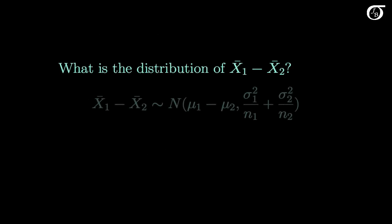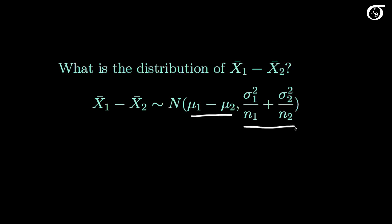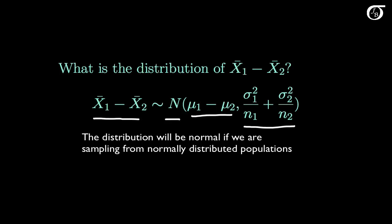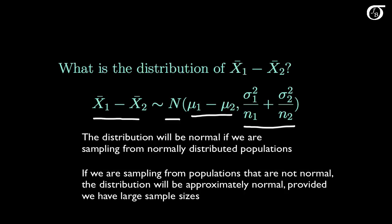Overall, what is the sampling distribution of the difference in sample means? Under the conditions laid out earlier, the difference in sample means will have a mean equal to the difference in population means, and a variance equal to the sum of the variances of X1 bar and X2 bar. X1 bar minus X2 bar will be normally distributed regardless of sample size if we are sampling from normally distributed populations, and approximately normal by the central limit theorem if we have large sample sizes from non-normal distributions.